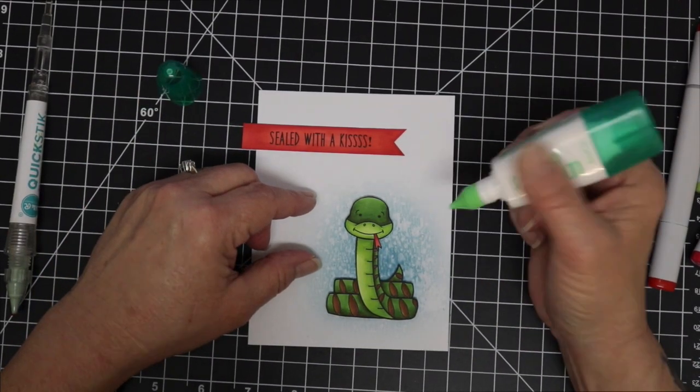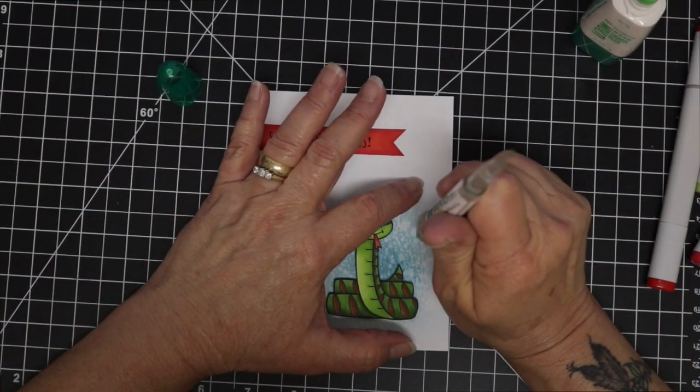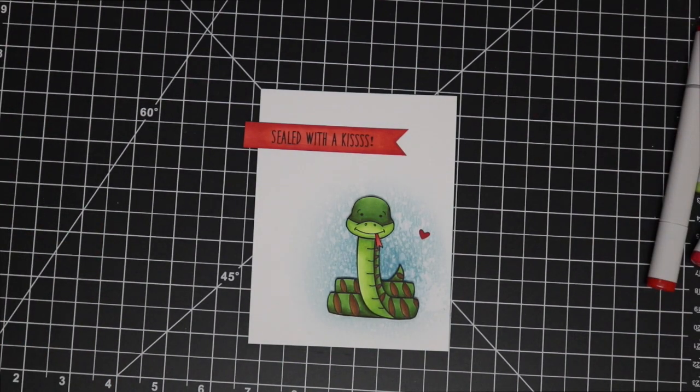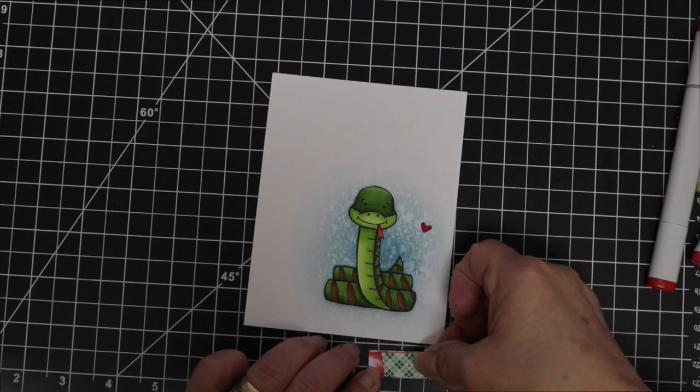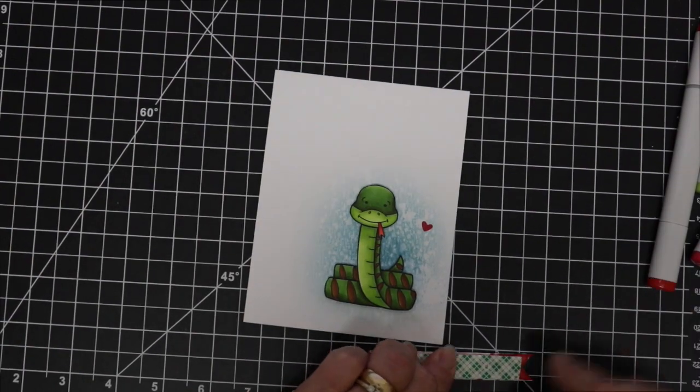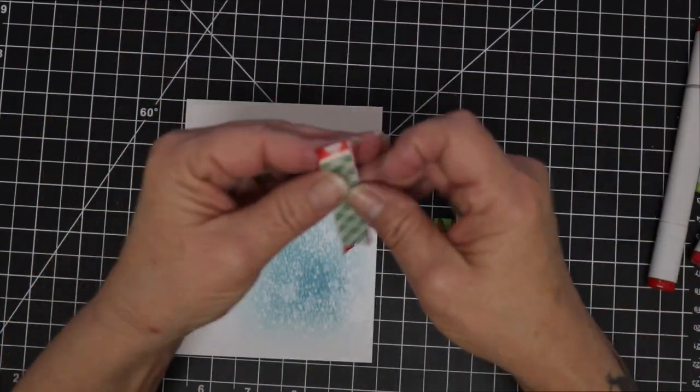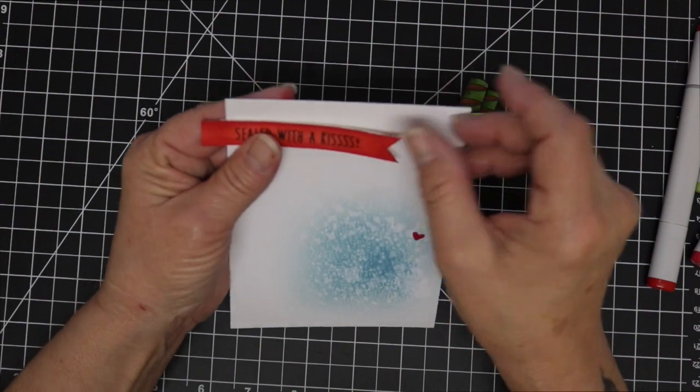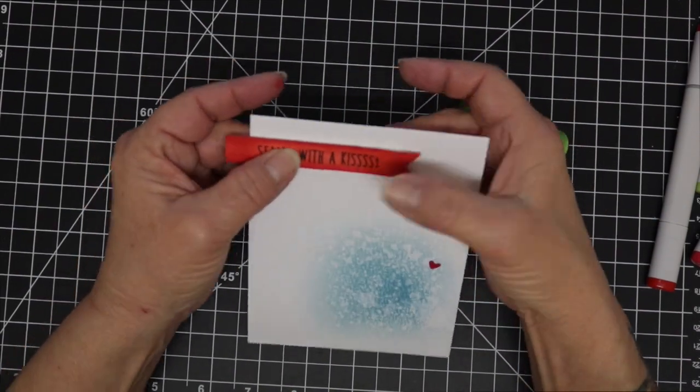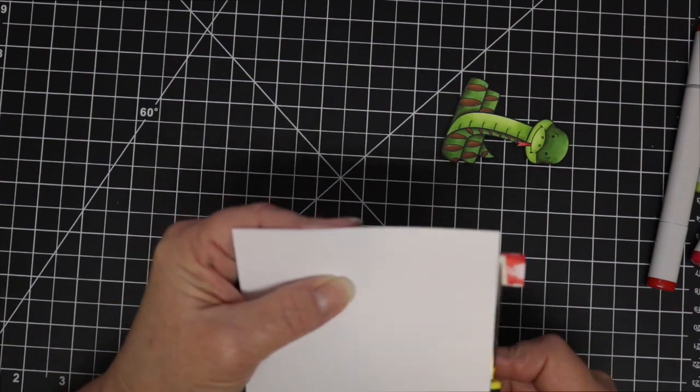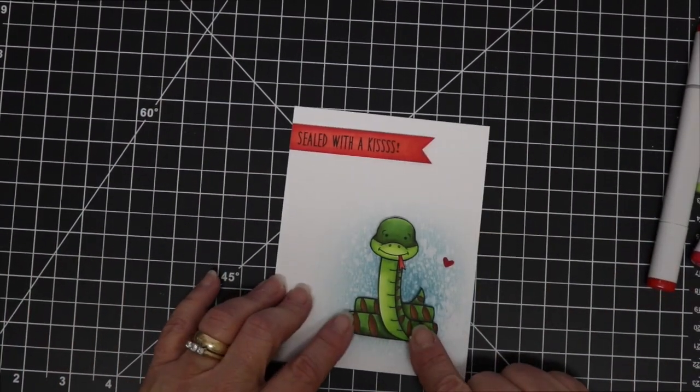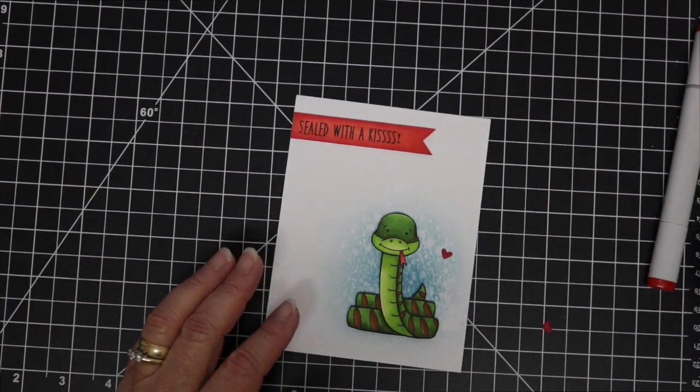So I'm going to get some leftover red hearts that I had left over from a die that I used on a previous card. And I decided to put one of the little hearts there beside the snake. And I'm going to pop up my sentiment banner with some foam tape. And I'm going to place that towards the top of the panel, leaving a little bit hanging off. And I will just turn that over and trim that off. And now to decide exactly where I'm going to put the snake.